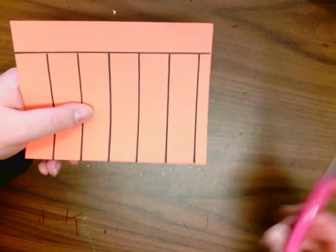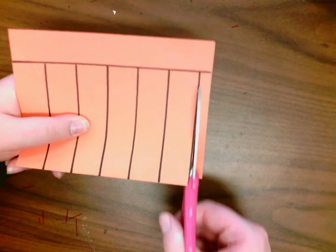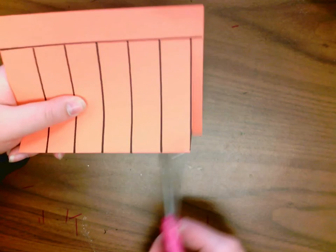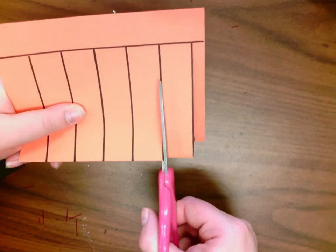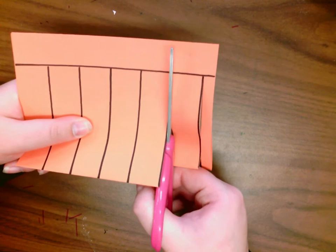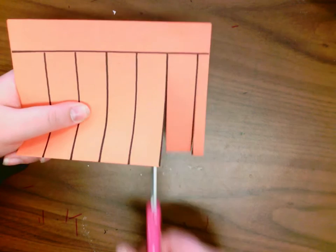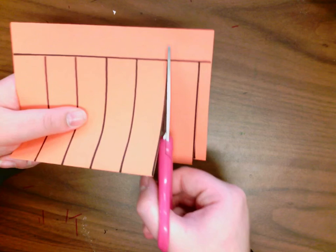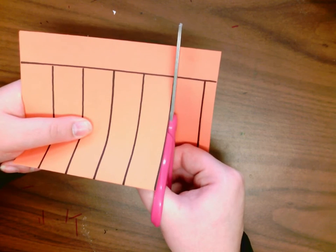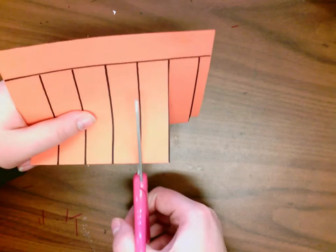I'm going to hold my paper, and I'm going to cut along the up and down lines. I'm going to cut all the way up, and stop. Cut all the way up, open my scissors wide, and stop. So this is going to be our stop line. We're going to stop right there. Make sure you get all the way up to that line, and stop right before you go over it.